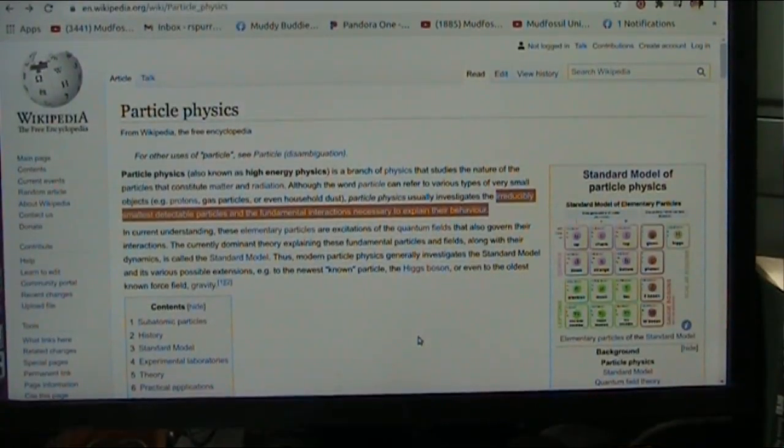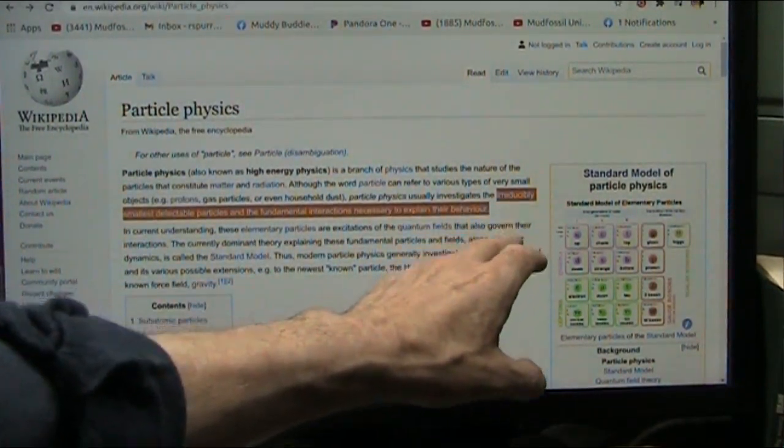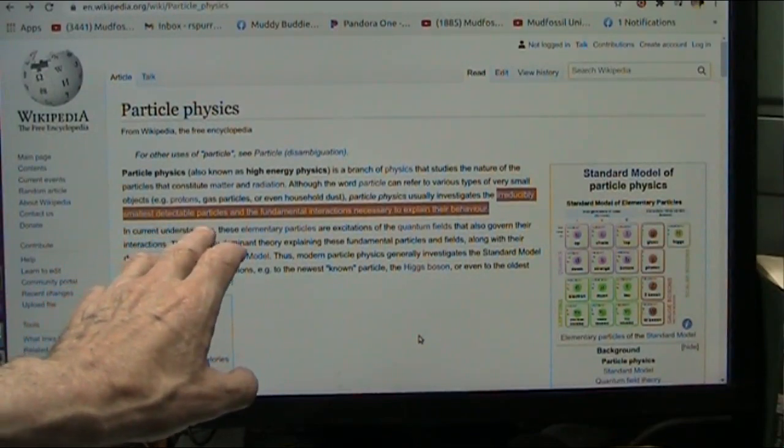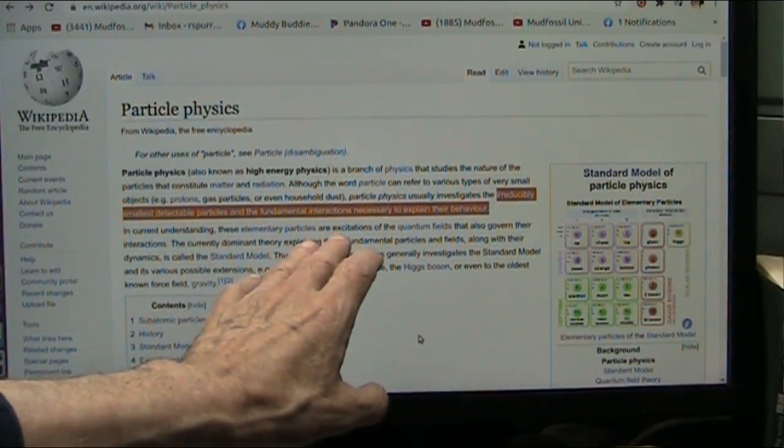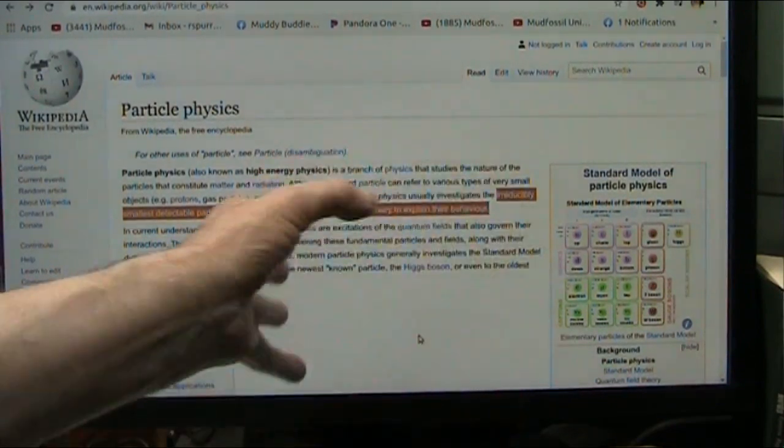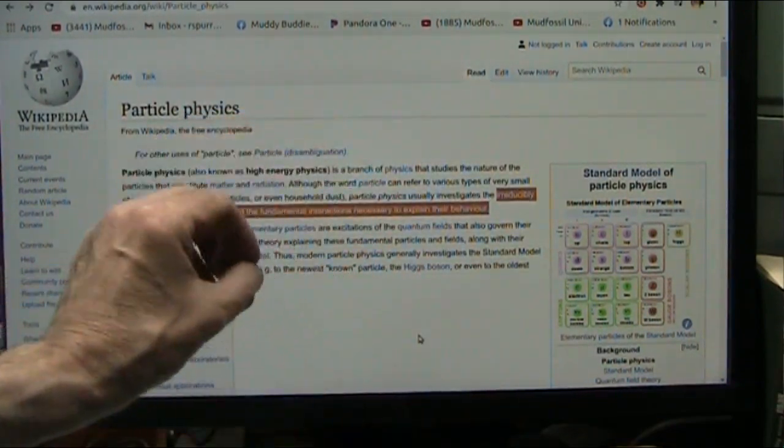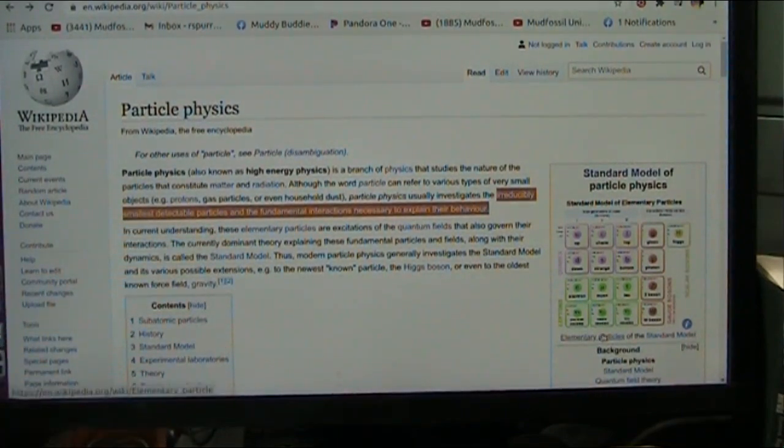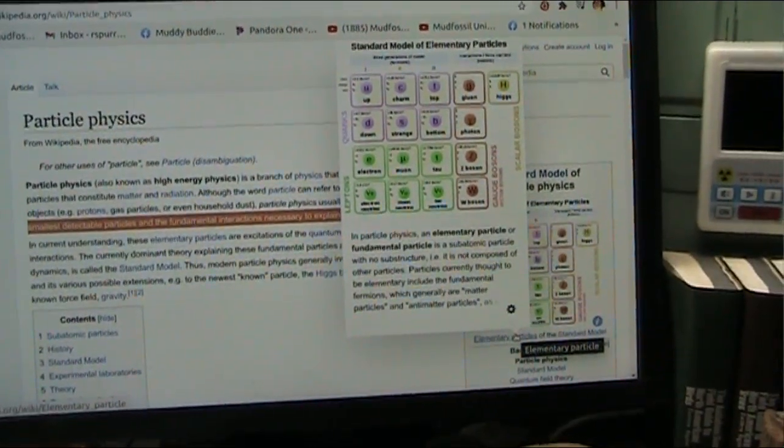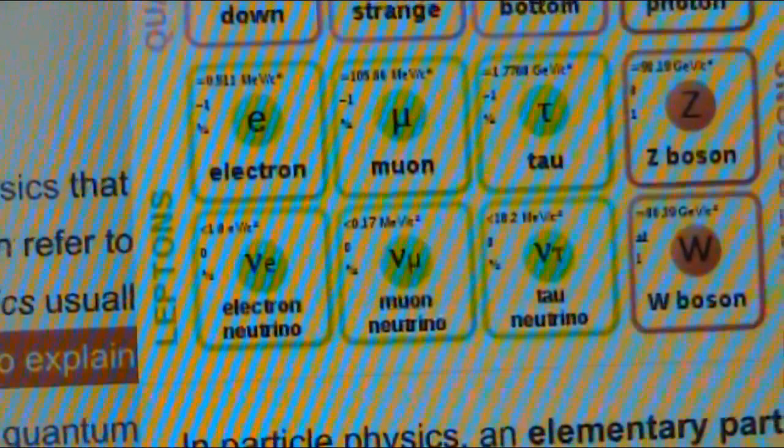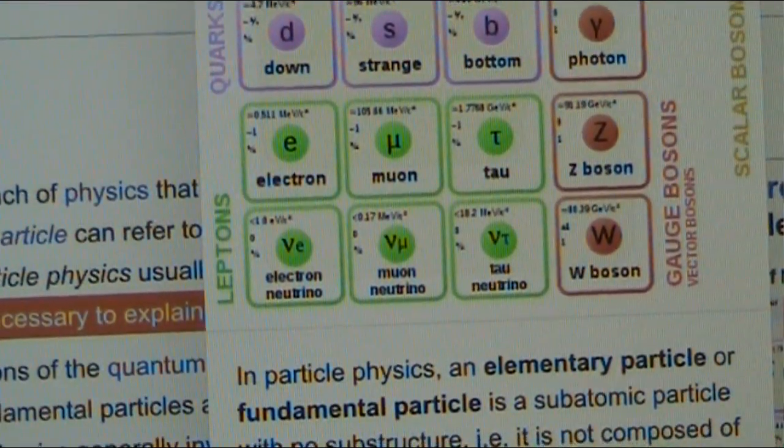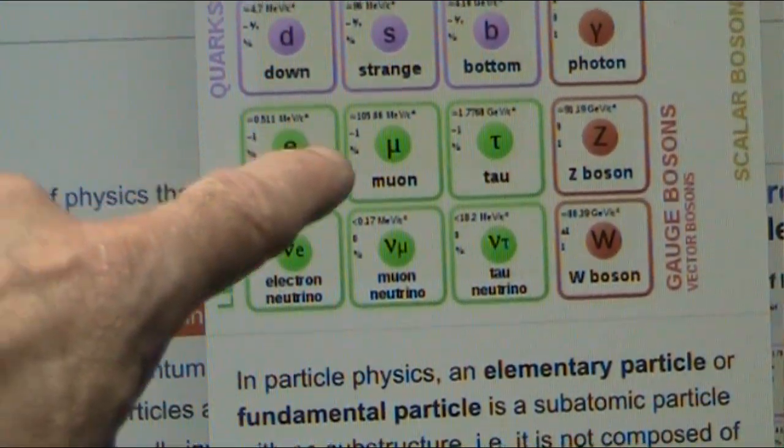Now the whole idea of particle physics is the irreducibility in the smallest detectable particles and the fundamental interactions necessary to explain their behavior. Why do they do what they do, and how small can we see, and what are their names, and what are their attributes? Let's remember these names, because they're going to become very important, and their values are also going to become very important. Electron, muon, and tau.